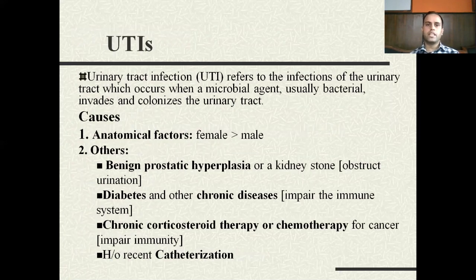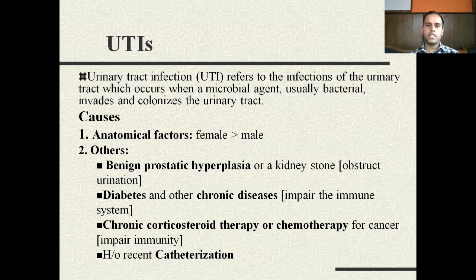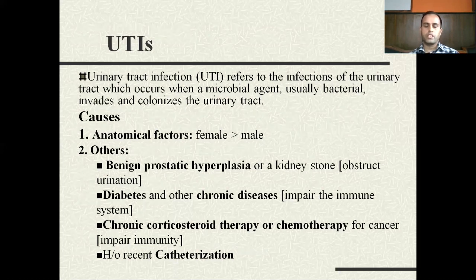What is urinary tract infection? Urinary tract infection refers to infections in the urinary tract. This occurs when a microbial agent — usually bacterial — invades and colonizes the urinary tract. UTI is mostly an ascending kind of bacterial infection, though it can also be of hematologic or lymphoid origin as well.